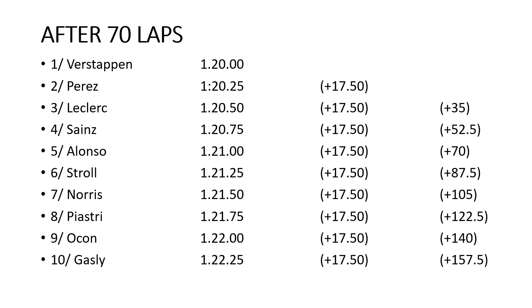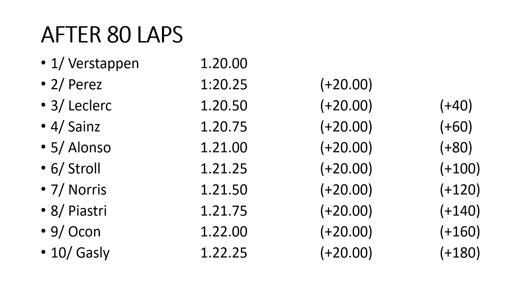After 70 laps, there's 17.5 seconds between each driver. Stroll in sixth is 87 seconds back, so Stroll has now been lapped. After 80 laps, it's 20 seconds between each competitor. Alonso in fifth is now 80 seconds behind the leader — so Verstappen has either just lapped or is about to lap Alonso in fifth place.